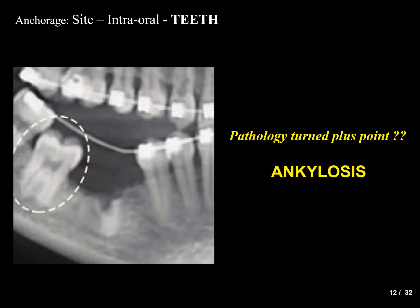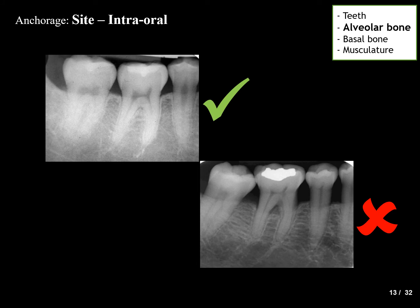What about an ankylosed tooth — can it provide anchorage? Yes, it can be used as an anchorage unit. The pathology of an ankylosed tooth involves calcification around the roots, forming a very strong anchorage unit that prevents any movement. So an ankylosed tooth can be used as a favorable anchorage unit.